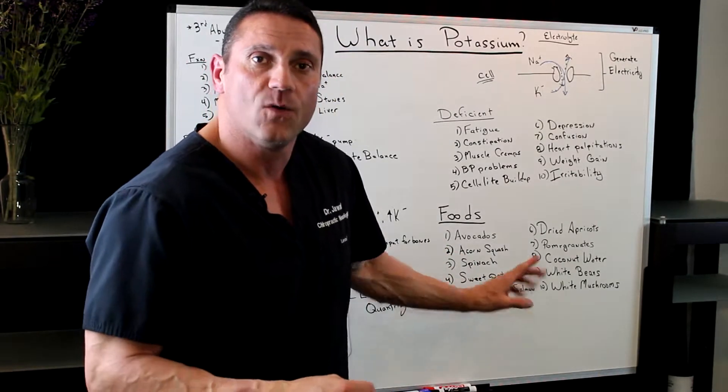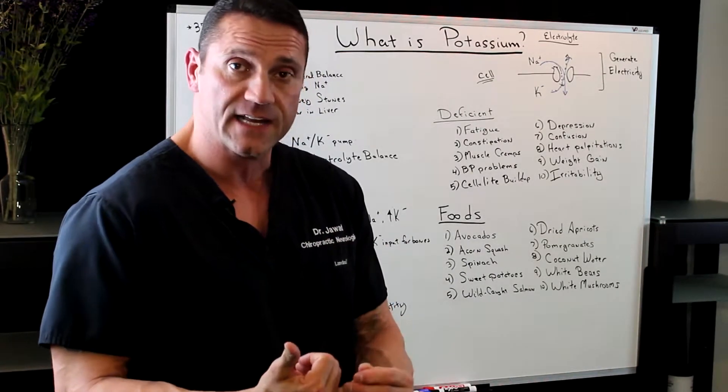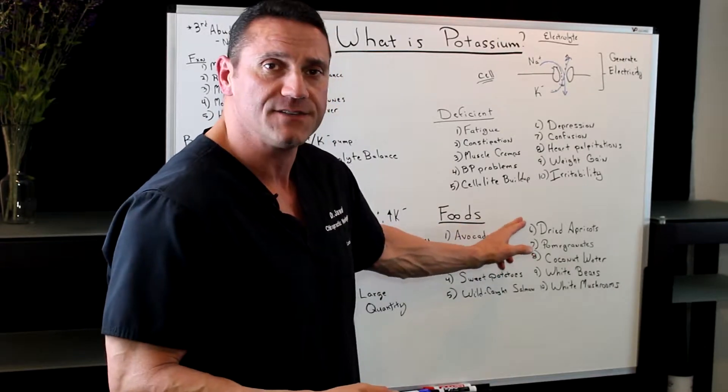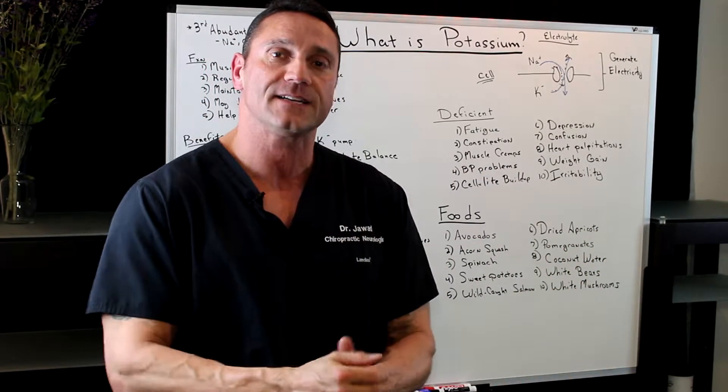Wild caught salmon. Make sure it's wild caught because those are organically fed. Dried apricots. Dried apricots, loaded in potassium. I recommend dried apricots.